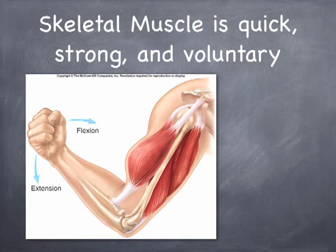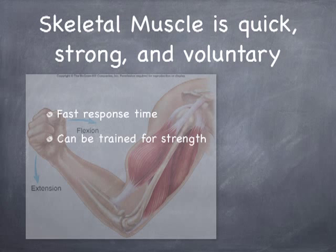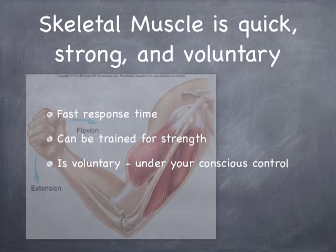Your response time, once your brain says 'I need to do this,' you need to be able to move very quickly. This can also be built to be very strong tissue — we see people that do some amazing muscular feats. The term voluntary here refers to the fact that this muscle is under your conscious control. It has a fast response time, it can be trained for strength, and it is under your conscious control.